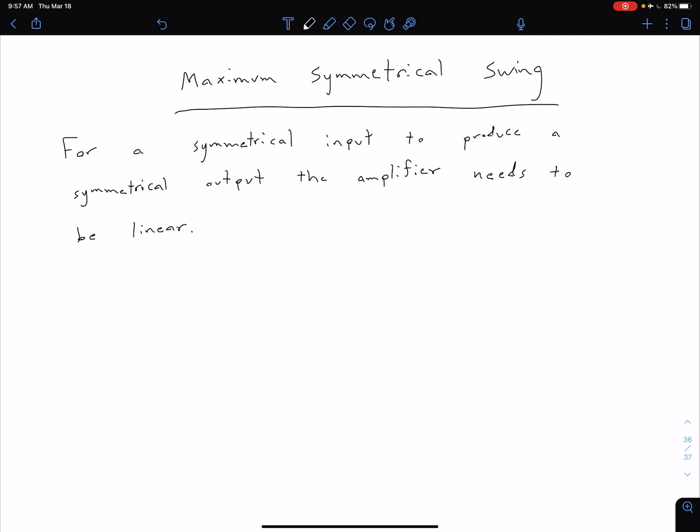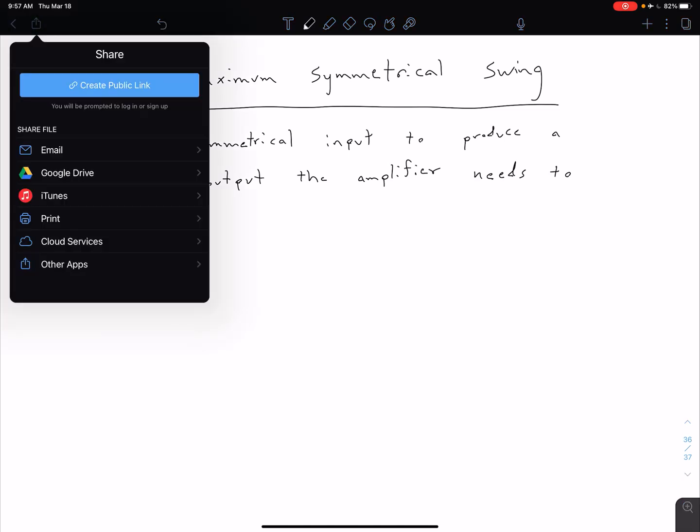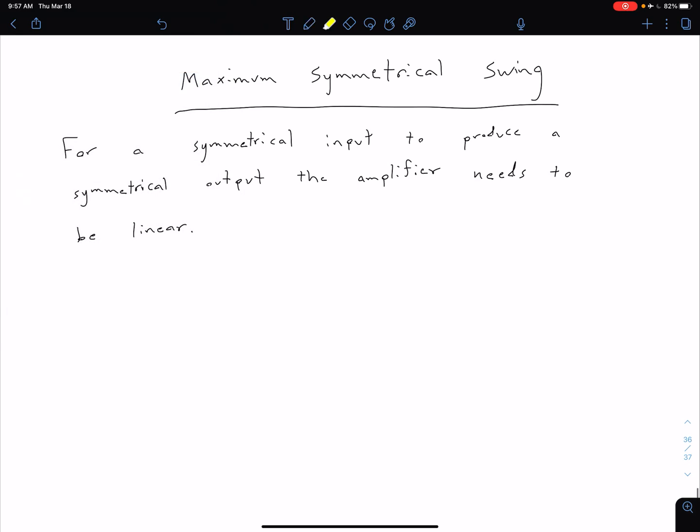For a symmetrical input to produce a symmetrical output, the amplifier needs to be linear. What that means is we want to be in the forward active mode, so we don't want to be in saturation and we don't want to be in cutoff.